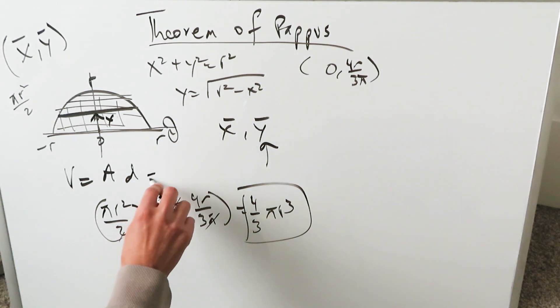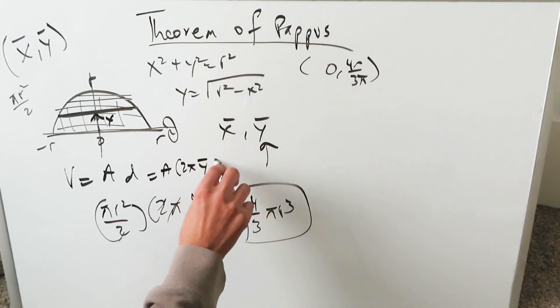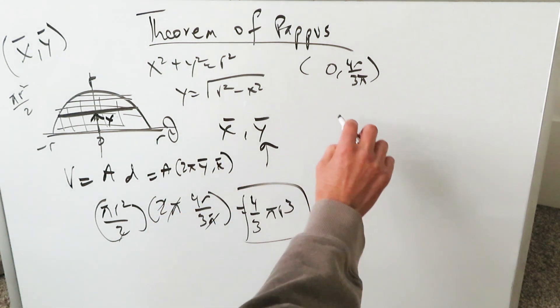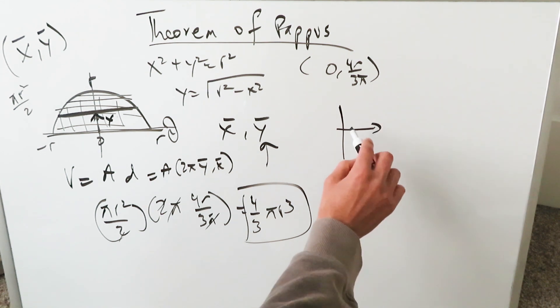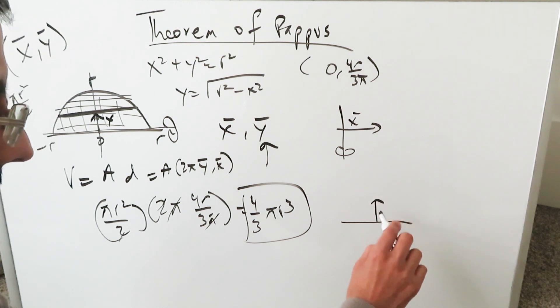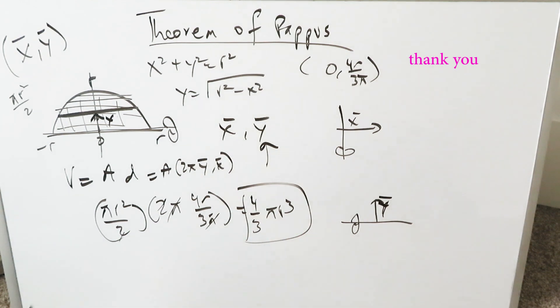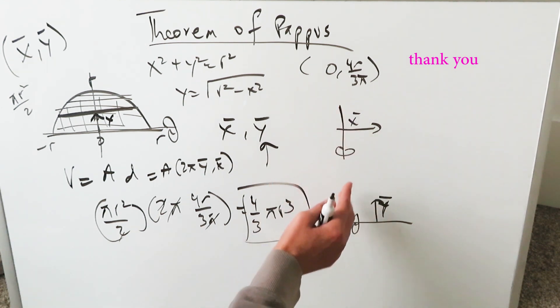And you know again, it's area times either 2π·ȳ or x̄ value. How do you know which one to use? If you're looking across in the x direction from your line of rotation, then you're using the x̄ value. If you're looking across in the y direction of a line of rotation, then you're using a ȳ value. And remember, for the theorem of Pappus, the region of space must be located only on one side of your line of rotation, not along both sides.